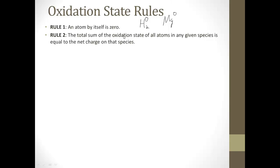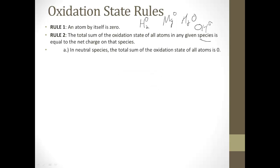Rule two: the total sum of the oxidation states of all atoms in any given species — and that could be an atom or a molecule — is equal to the net charge on that species. We also need to take into account polyatomic ions. So if we have H2O, the sum of all oxidation states is zero because it has no charge. But if we think about OH minus, the total charge is going to be negative one. In a neutral species like water, the total sum is zero. In ions, the total sum equals the charge of the ion.